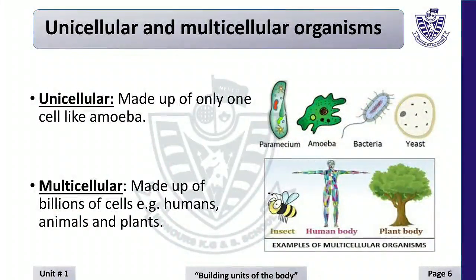Unicellular and multicellular organisms. Living organisms are made up of cells, and on the basis of cells, organisms are divided into two types: unicellular and multicellular.